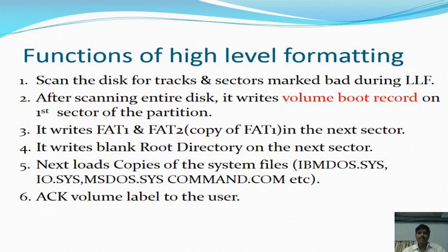The main functions of high-level formatting are as follows. First, it scans the disk for tracks and sectors marked bad during the low-level formatting. Second, after scanning the entire disk, it writes the volume boot record on the first sector of the partition. Third, it writes FAT1 and FAT2 in the next sector. FAT2 is simply a duplicate copy of FAT1, generally used to maintain redundancy.